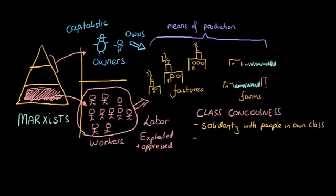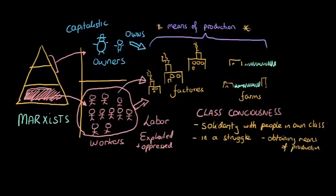And that they must struggle to overcome this oppression and exploitation. And part of that may involve seizing and obtaining the means of production and redistributing the means of production amongst the workers. So in class consciousness, the workers seek to obtain the factories and the farms and take over the ownership.